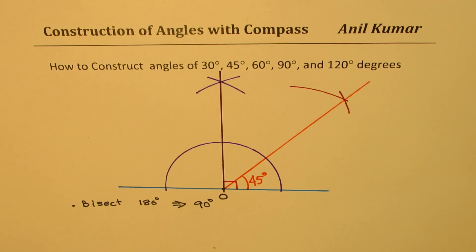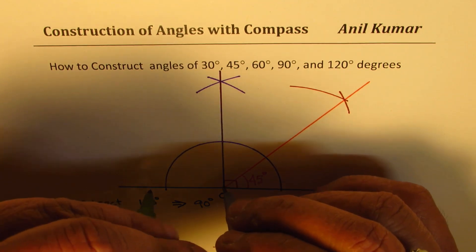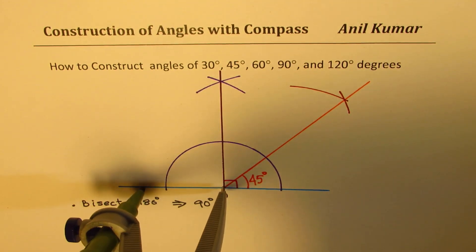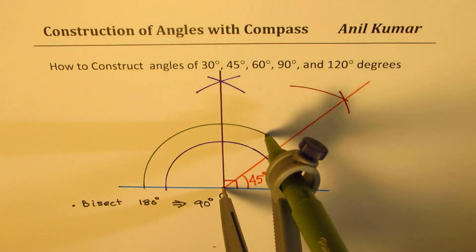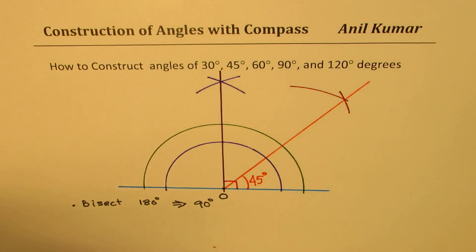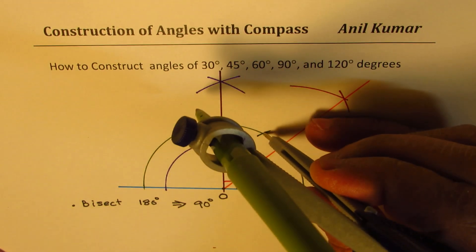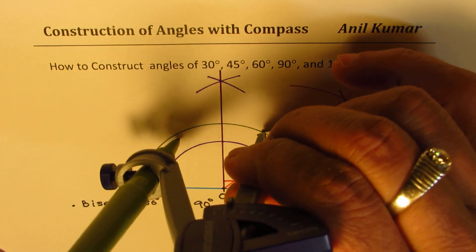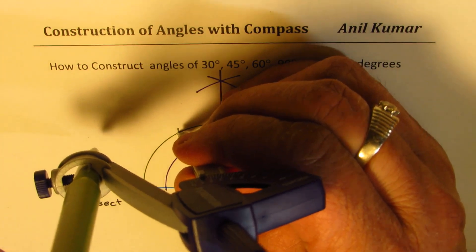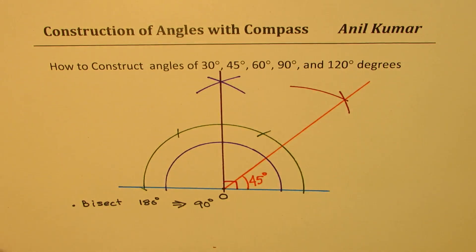Now let's talk about 30 and 60 degrees. I'll start a new construction. I'll draw an arc just as we did for the 90 degrees. Without changing the length of the arc, I'm going to cut it into three equal parts — one part, second part, third part — so 180 degrees is divided into three equal parts.